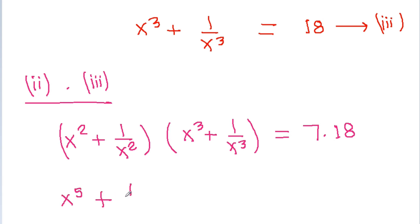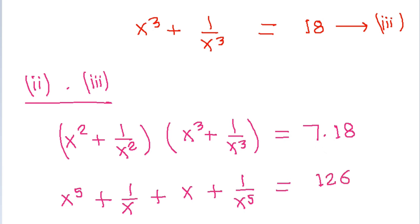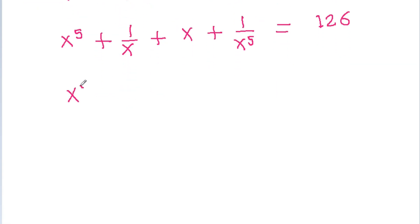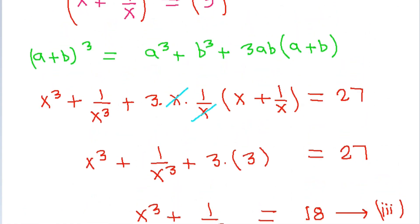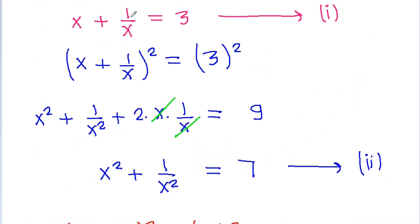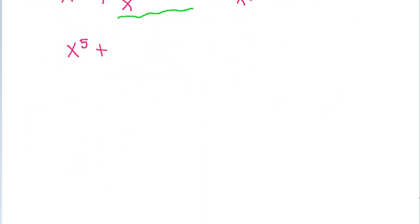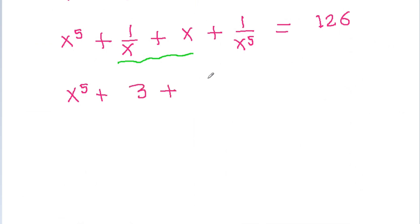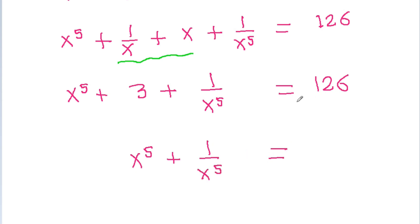Continuing the expansion: x squared times x cubed is x to the power 5, minus x squared times 1 by x cubed is 1 by x, minus 1 by x squared times x cubed is x, minus 1 by x squared times 1 by x cubed is 1 by x to the power 5. This equals 126. So we get x to the power 5 minus 1 by x to the power 5, plus the middle terms (x minus 1 by x) which equal 3, giving us x to the power 5 minus 1 by x to the power 5 is equal to 126 minus 3, which is 123. That is the required answer.